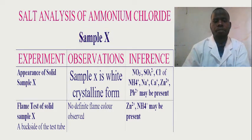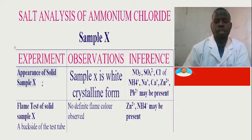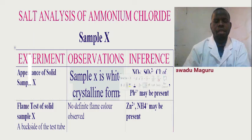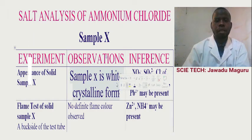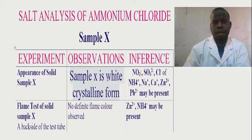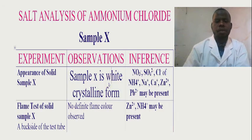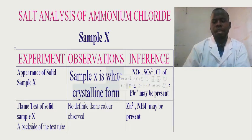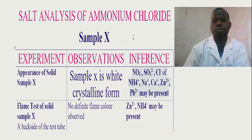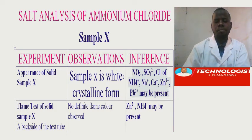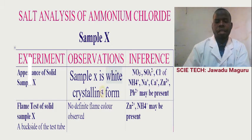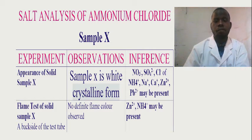So we start with the appearance of salt sample X. Appearance is white, crystalline form, as you see in the sheet. There are different rows for white and crystalline. You are supposed to join those sentences found in observation and in inferences. Sample X is white, crystalline form. The inference: nitrate, sulfate, chloride of ammonium, sodium, calcium, zinc, and lead may be present. It means we have joined the inference of white and the inference of crystalline form in one sentence.